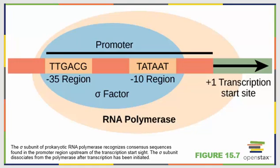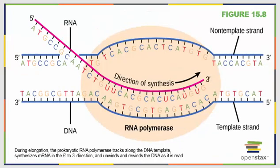Binding at the negative 10 region unwinds the DNA. Once this occurs, the sigma factor leaves and the polymerase continues on. The creation of RNA proceeds in the 5' to 3' direction at a rate of about 40 nucleotides per second. Base pairing between RNA and DNA isn't terrifically stable, so RNA polymerase helps hold the system in place. Nucleotides are added one by one until the termination site is reached. Termination signals can be protein-based or based in the RNA code itself.